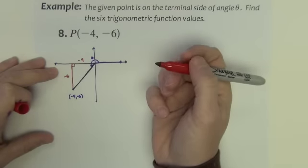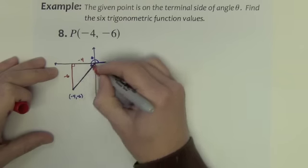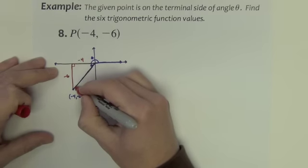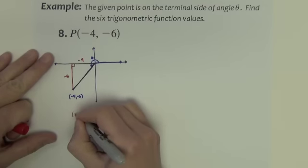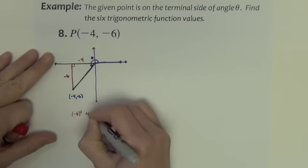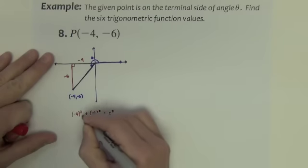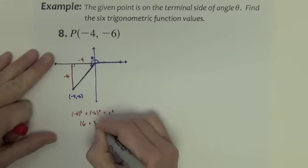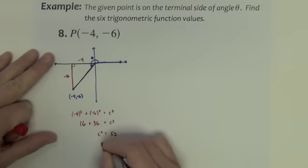No matter which method we go about doing it, we're going to need to find what the hypotenuse, the r, for this triangle is. And we'll use Pythagorean's theorem to do that. We could say that negative four squared plus negative six squared equals c squared. So that's 16 and 36 equals c squared. So c squared is 52.